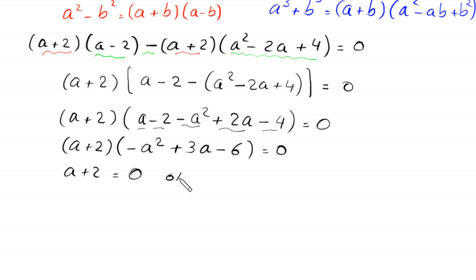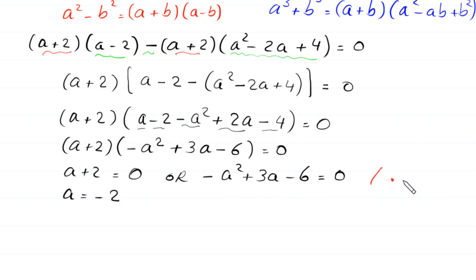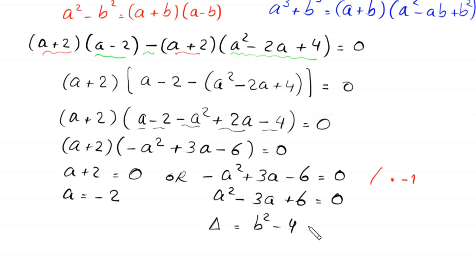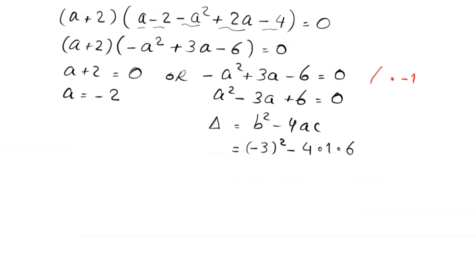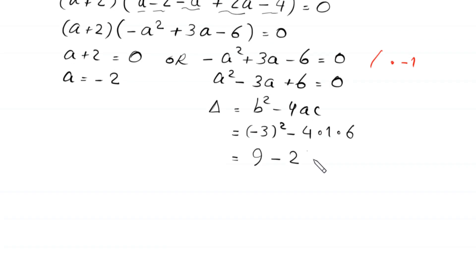From this, either a + 2 = 0 or −a² + 3a − 6 = 0. From the first, a = −2. For the second, multiplying by −1 gives a² − 3a + 6 = 0. The discriminant is b² − 4ac = (−3)² − 4(1)(6) = 9 − 24 = −15. Since the discriminant is less than 0, there are no real solutions from this equation.